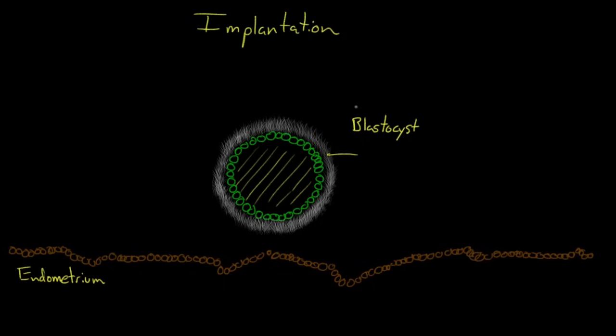you're still stuck inside this shell, this thick layer of glycoproteins surrounding you, called the zona pellucida. Well, good thing. About this time, your zona pellucida is starting to disintegrate away. You can see it's starting to fall apart, and your outer cells are becoming exposed. You're hatching out of your zona pellucida.